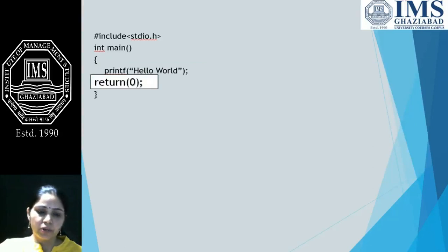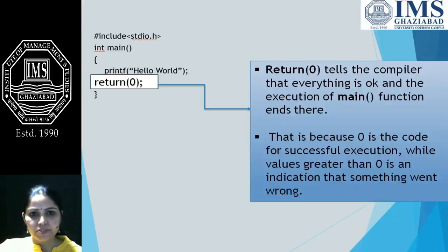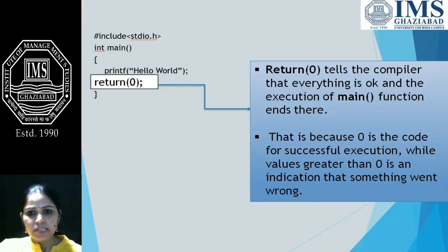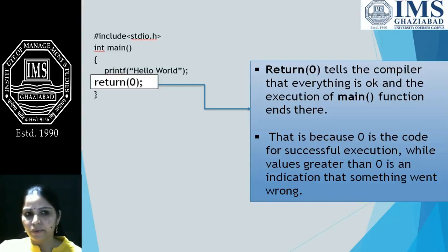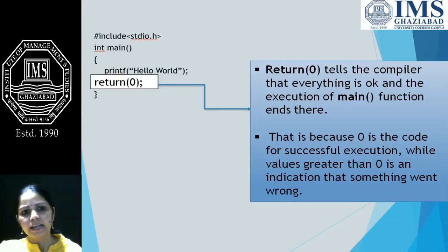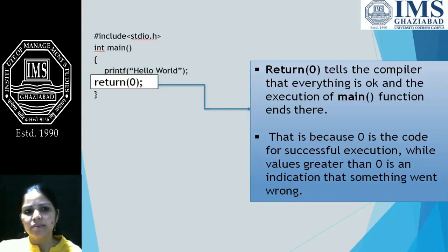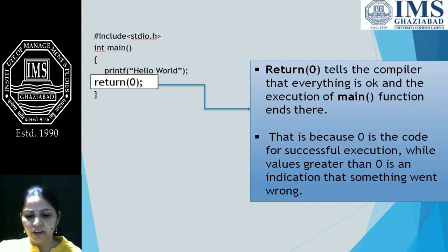Then we have return 0. Why return 0? Because the main function has return type int. This return 0 tells the compiler that everything is okay and the execution of the main function ends here. Zero is the code for successful execution. If we don't return any value, it means there is an issue with our program. So whenever we use main with return type int, we must always use the return statement at the end, returning 0 to indicate successful execution.